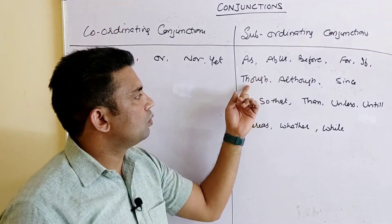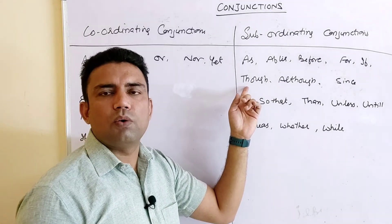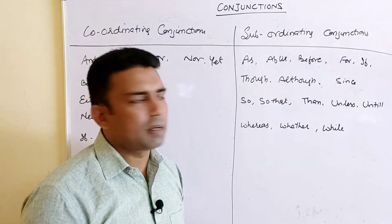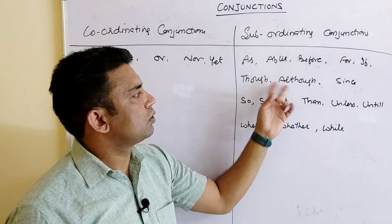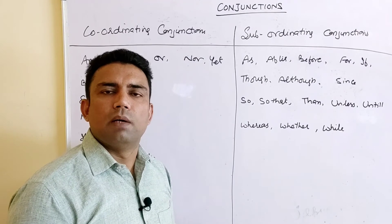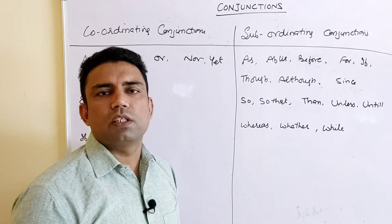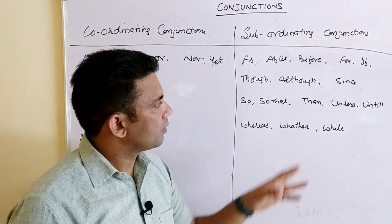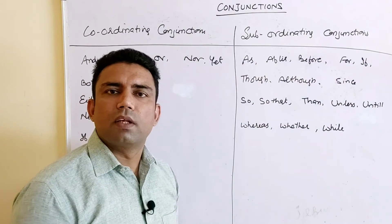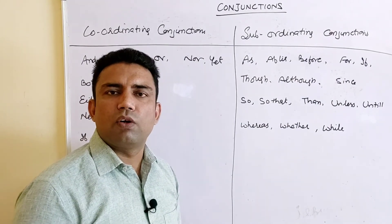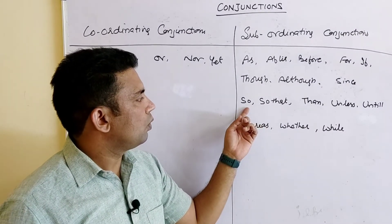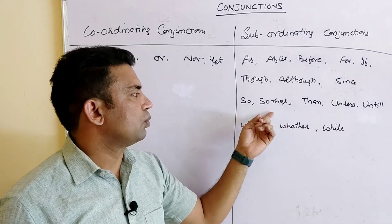'Though' is again a condition: 'Though I went there, I was unable to attend the party.' 'Although' is almost the same: 'Although we were there in the locality, we were unable to join the party.' 'Since' is used for time: 'Since it was nine o'clock, I went home.'